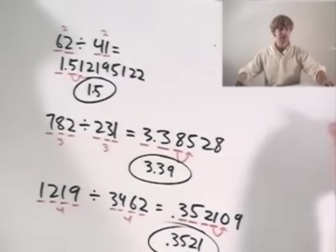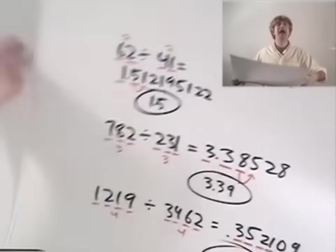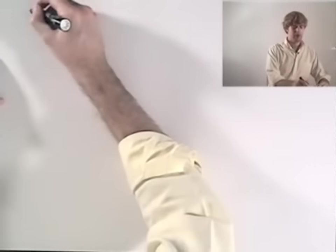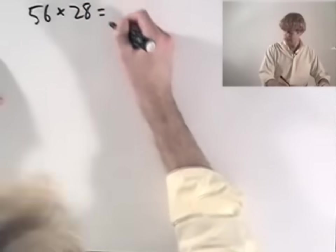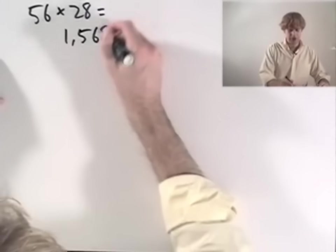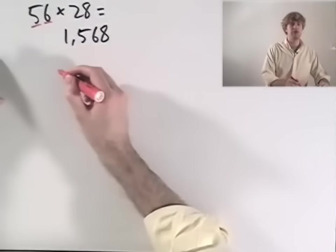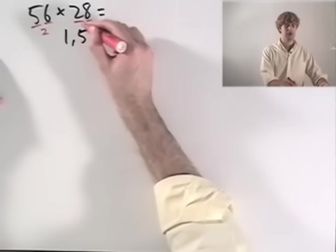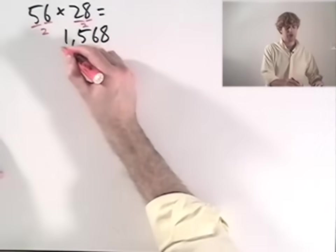Now we can do this exact same thing with multiplication. All we have to do is round and then we add a couple of zeros if we need to. Let me show you what I mean. When I take 56 and multiply it by 28, the answer that I get is 1568. But as with division, I look at the significant figures in the two numbers I multiplied together, two here and two here, which means that I'm going to round my final answer, two numbers.